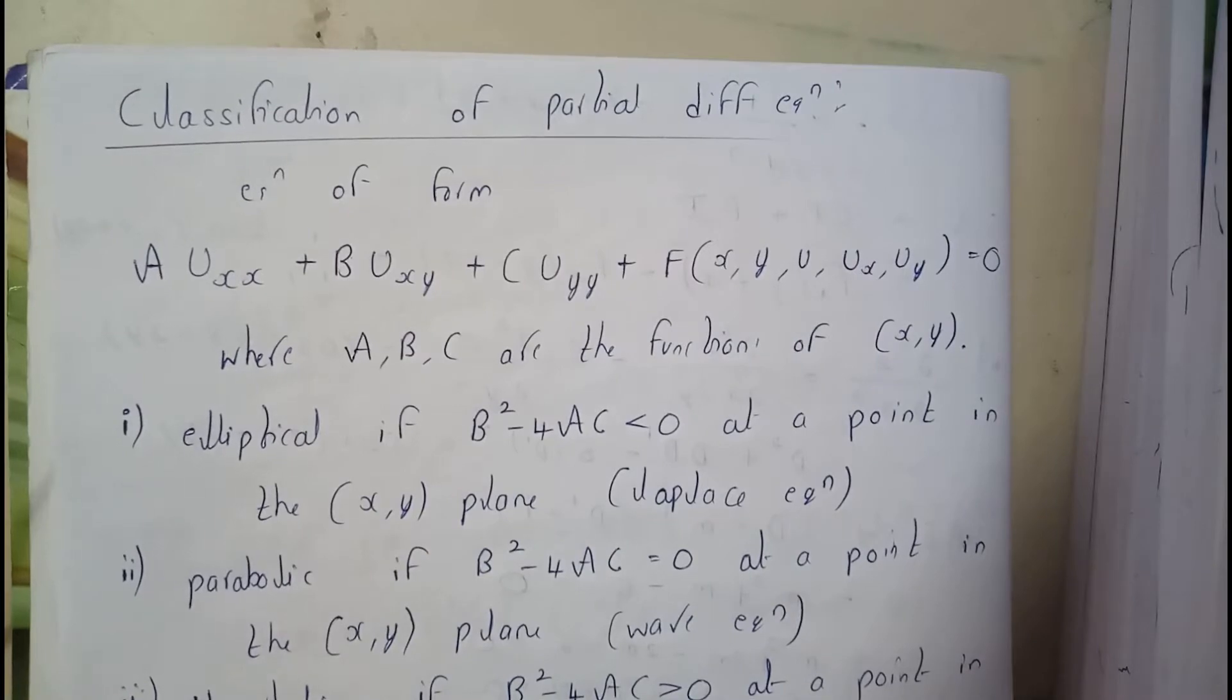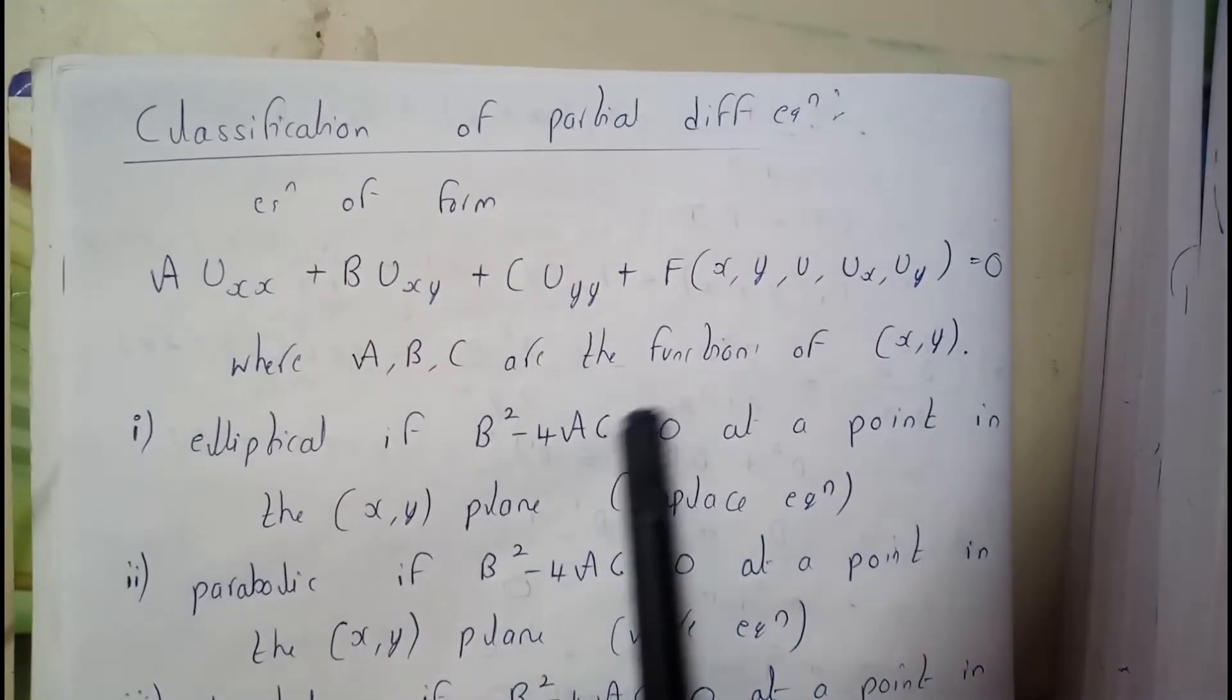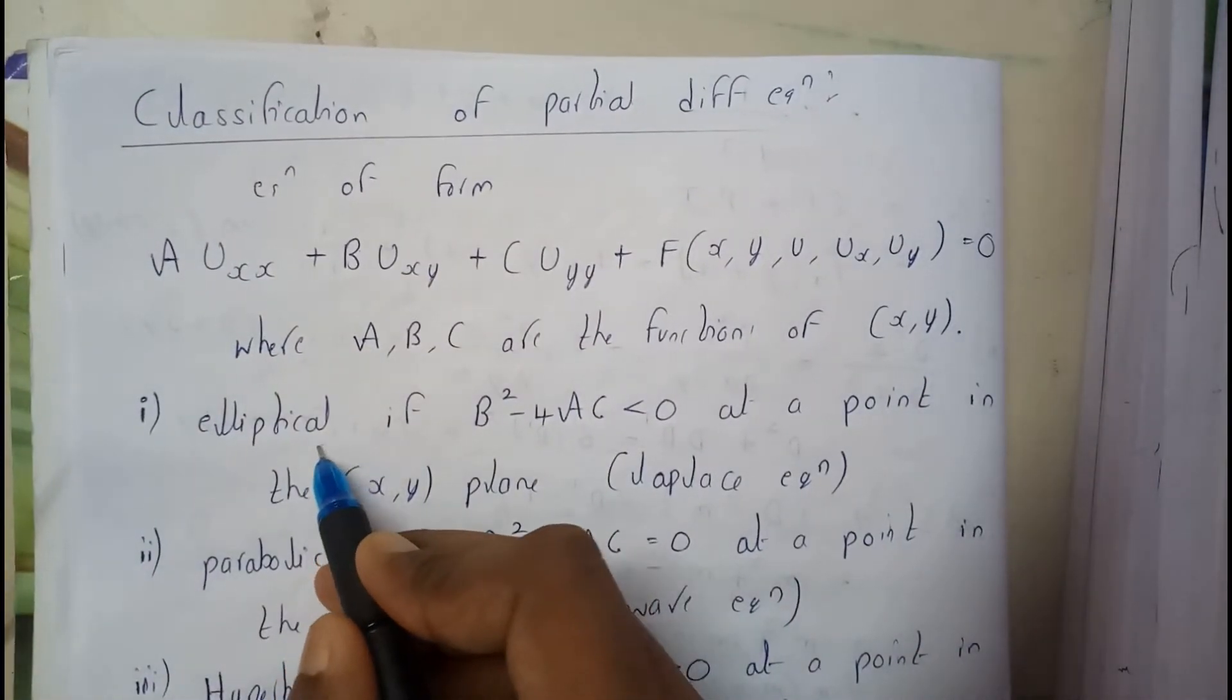This is the basic equation in which the most important terms are A, B, and C, which are functions of (x,y). We can classify the equation as ellipse, parabola, or hyperbola by finding the value of B² - 4AC.